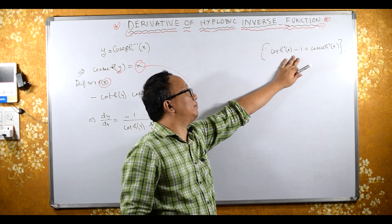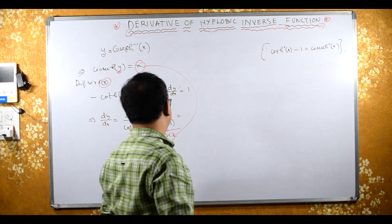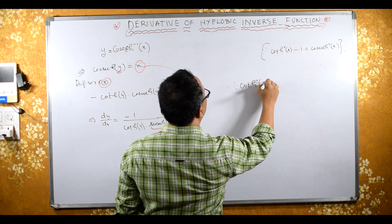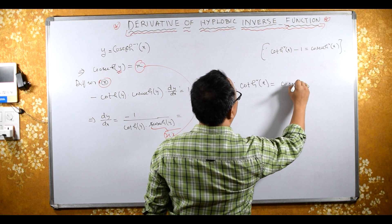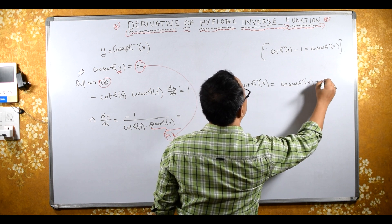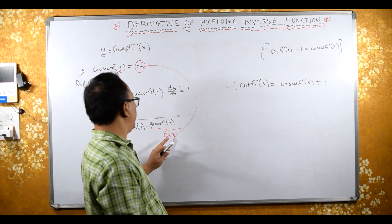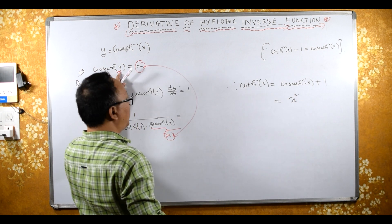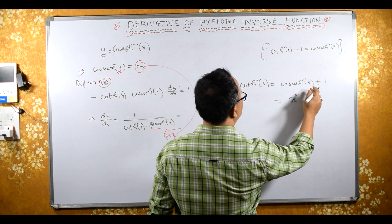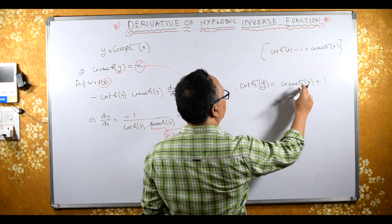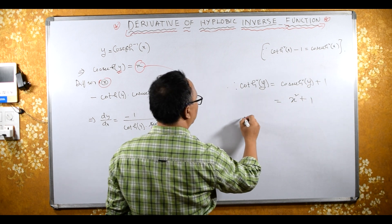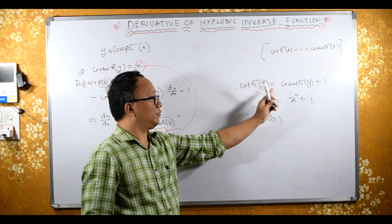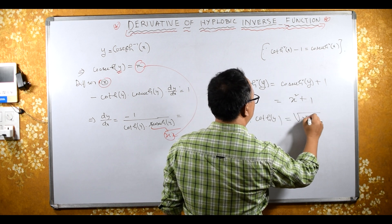We use the identity: cot hyperbolic square y minus 1 equals cosec hyperbolic square y. We want to find cot hyperbolic y, so rearranging: cot hyperbolic square y equals cosec hyperbolic square y plus 1, which equals x squared plus 1, since cosec hyperbolic y equals x. Taking the square root on both sides to remove the square — square root and square cancel.